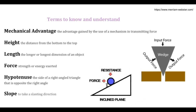Terms to know and understand. Mechanical advantage: the mechanical advantage gained by the use of a mechanism in transmitting force. Height: the distance from bottom to top. Length: the longer or longest dimension of an object. Force: strength or energy exerted. Hypotenuse: the side of the right angle triangle that is opposite the right angle.